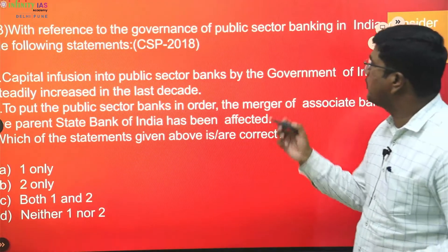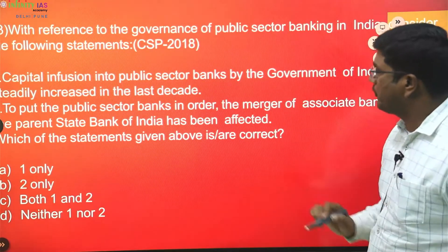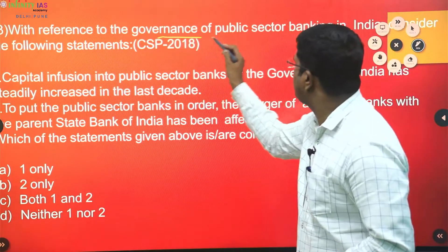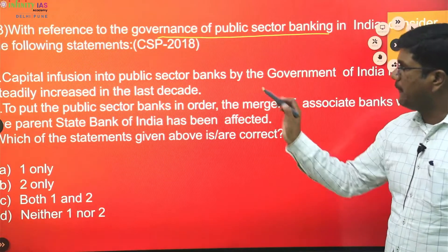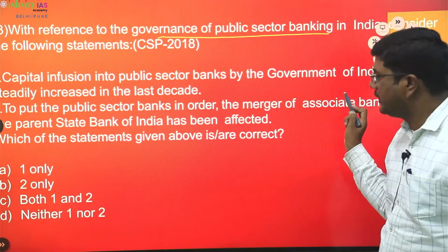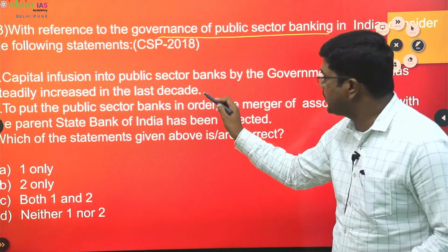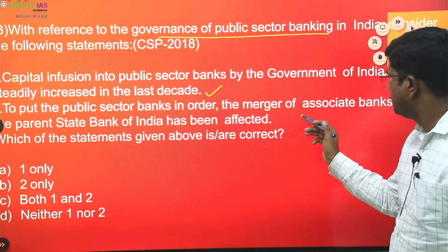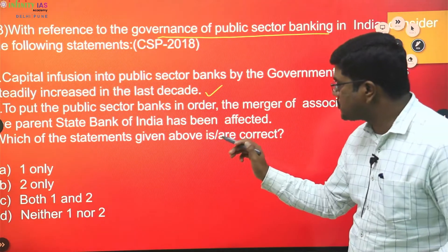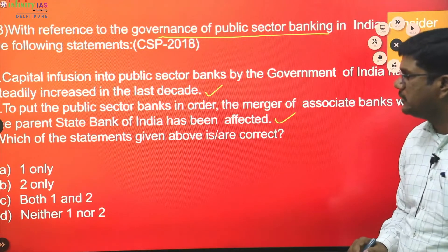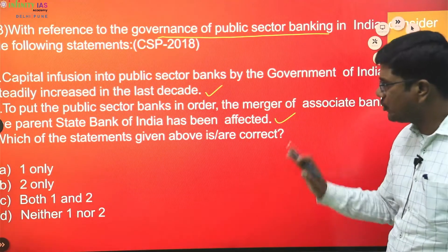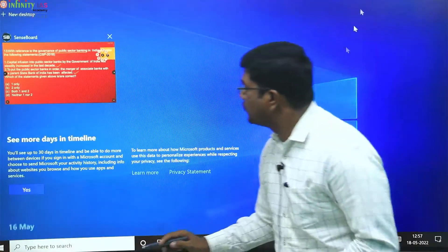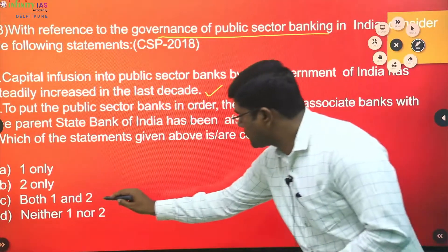Next question: with reference to governance of public sector banking in India, consider the following statements. Statement one — capital infusion into public sector banks by the Government of India has steadily increased in the last decade — yes, that is correct. Statement two — to put public sector banks in order, the merger of associate banks with the parent State Bank of India has been effected — also correct. Both statements are informative in nature, so the answer is both one and two, option C.